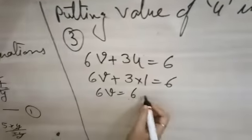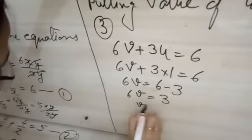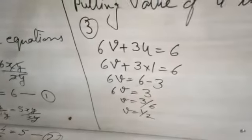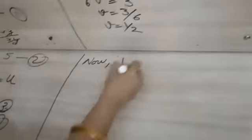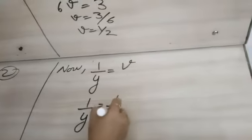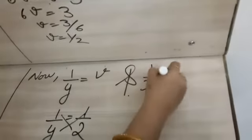6v is equal to 3, so v is equal to 3 upon 6, so v is equal to 1 upon 2. But we know that 1 upon y is equal to v, so 1 upon y is equal to 1 upon 2. Cross multiply, 2 is equal to y.